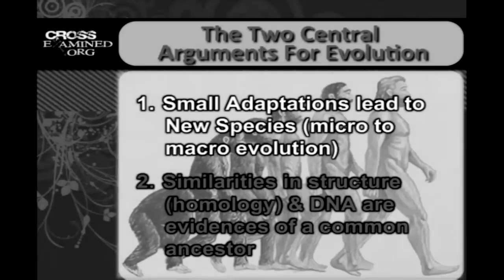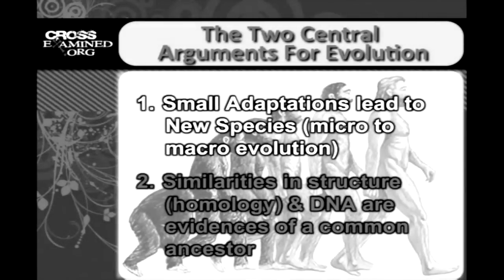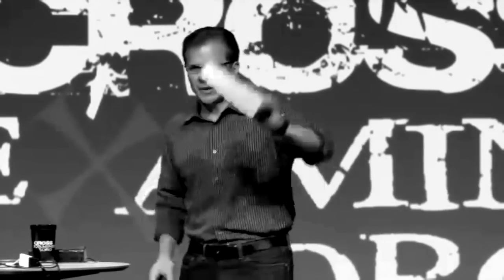The second major area that evolutionists say points to macroevolution is similarities in structure called homology and DNA — that these are evidences of a common ancestor. We'll start with DNA first and go to our friend Richard Dawkins, author of The God Delusion, the most popular atheist in the world today.